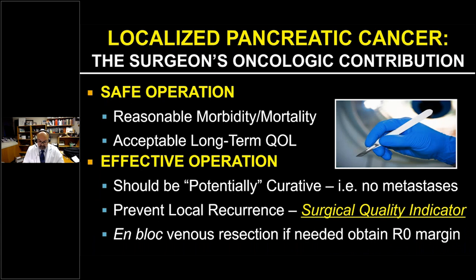The only oncologic contribution we have as surgeons is to provide a safe and effective operation — effective meaning potentially curative. The only reason we're in the operating room for that patient is to prevent local recurrence, and that is likely going to be a surgical quality indicator moving forward. The standards suggest that an en-bloc venous resection should be performed if necessary for an R0 margin.